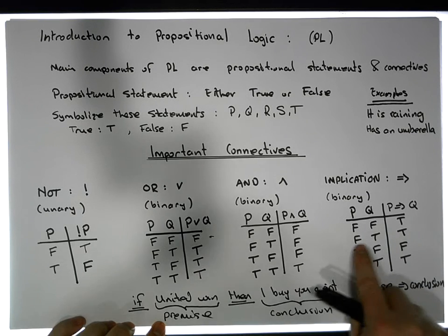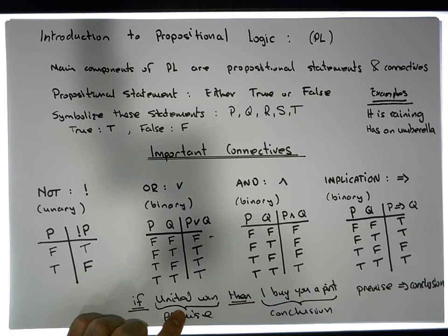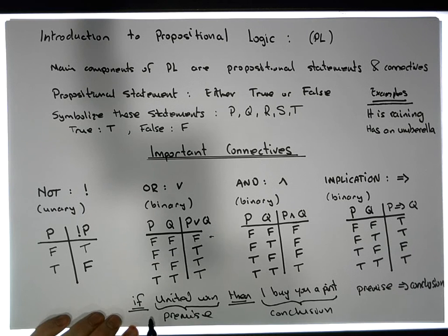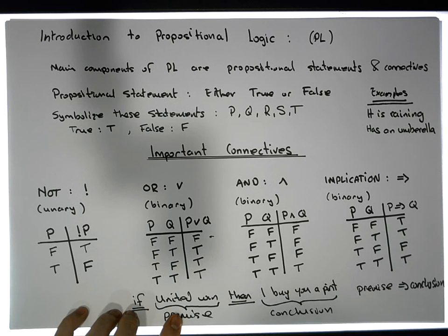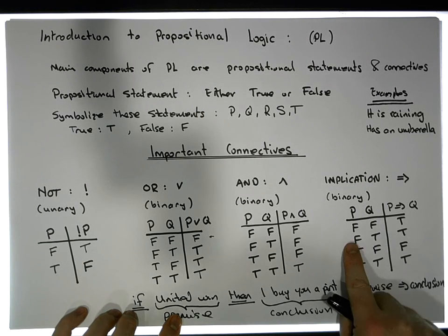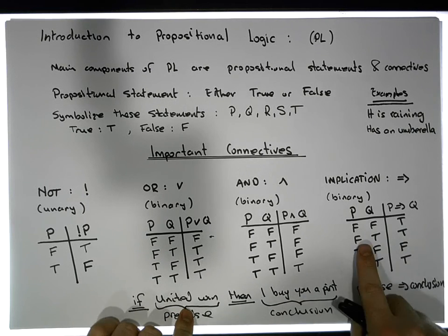The false/true case is a little unusual. United didn't win, but I did buy you a pint. There's no expectation on me to buy you a pint, since I said 'if United win.' But it doesn't preclude me from buying you a pint at some other stage. United didn't win, it just happened I bought you a pint anyway — I still haven't told any lies, so it must be true.